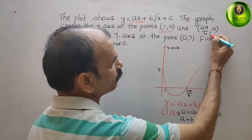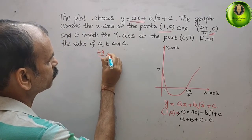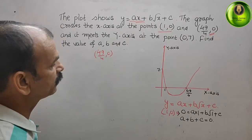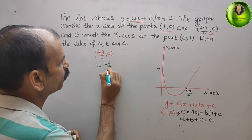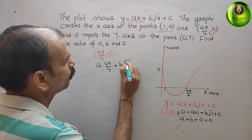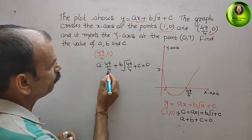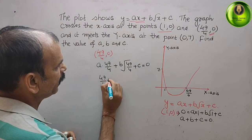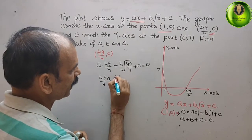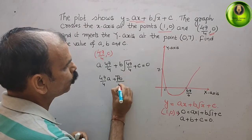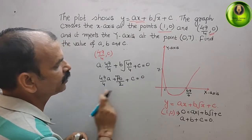Now we substitute the second point, (49/4, 0). Since y = 0, we get: a(49/4) + b√(49/4) + c = 0. Simplifying √(49/4): 49 is the perfect square of 7 and 4 is the perfect square of 2, so √(49/4) = 7/2. This gives: 49a/4 + 7b/2 + c = 0.